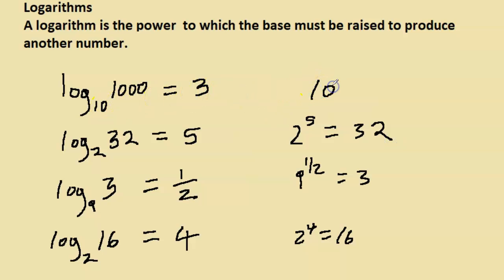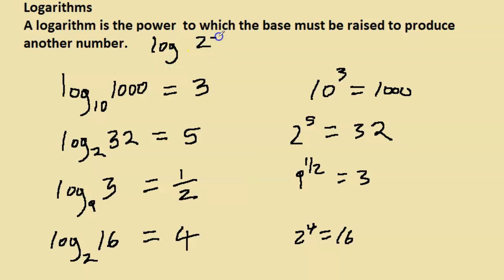This means 2 to the power of 5 gives us 32, and 10 to the power of 3 gives us 1000. That's how we work with logs as a special way of writing numbers. The number 3 can be written as log 1000 base 10, the number 5 as log 32 base 2, one-half as log 3 base 9, and 4 as log 16 base 2. For example, log 27 base 3 — you ask what power do I need to raise 3 to get 27 — the answer is 3, because 3 to the power of 3 gives you 27.